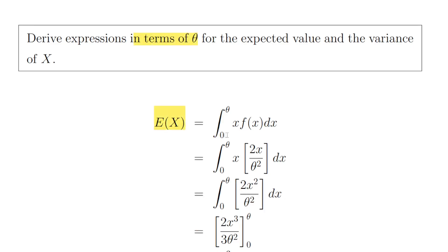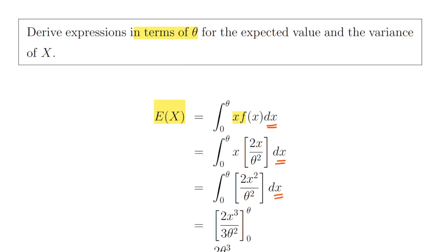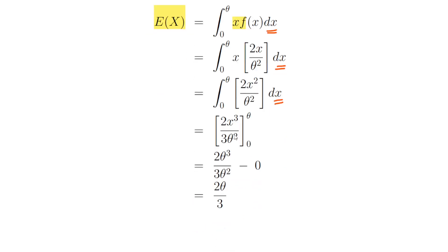The expected value of x, as always, is the integral of x times the probability density function of x. The limits are zero to theta. So x times f of x is x times 2x divided by theta squared, which is 2x squared divided by theta squared dx. Since theta squared is a constant, the key part is integrating 2x squared, which gives 2x cubed divided by 3. So the expression becomes 2x cubed divided by 3 theta squared, evaluated from zero to theta.